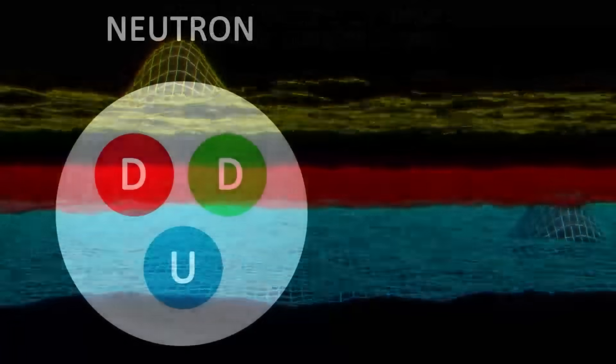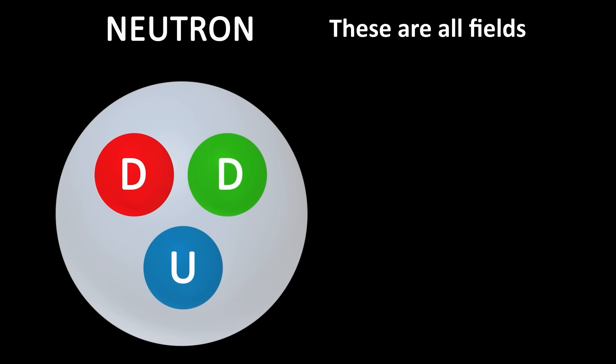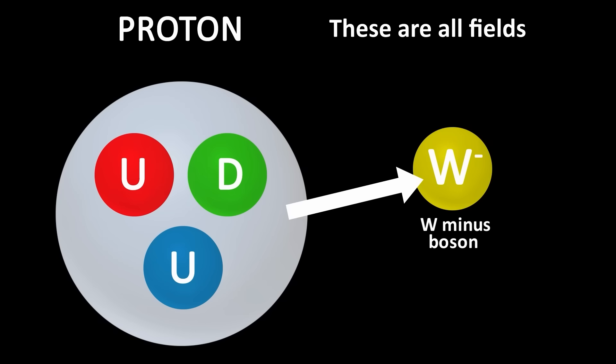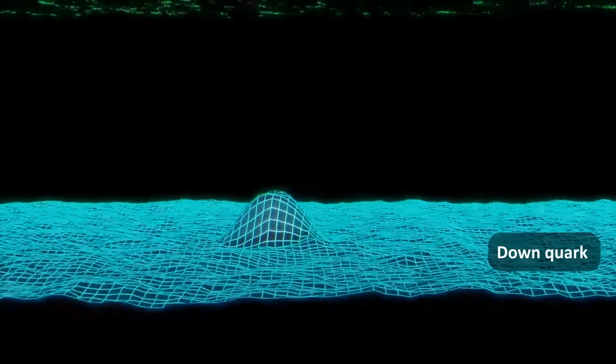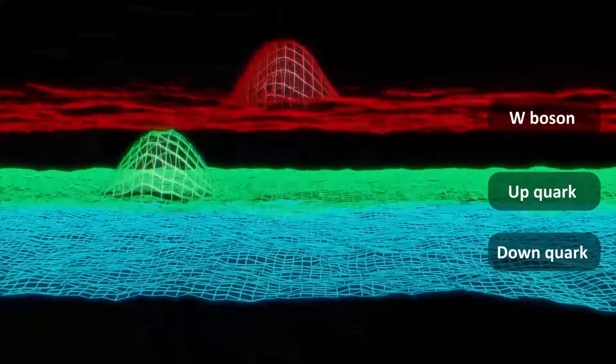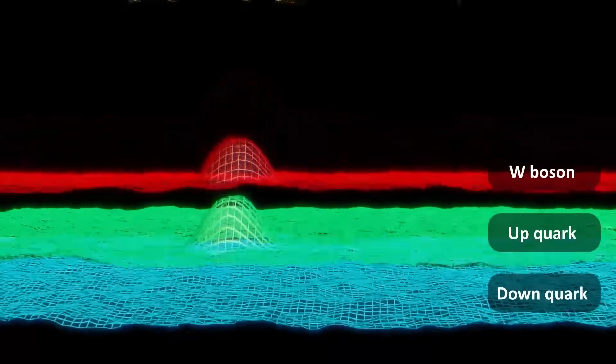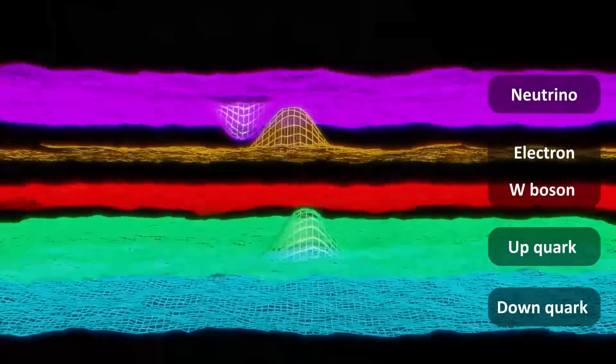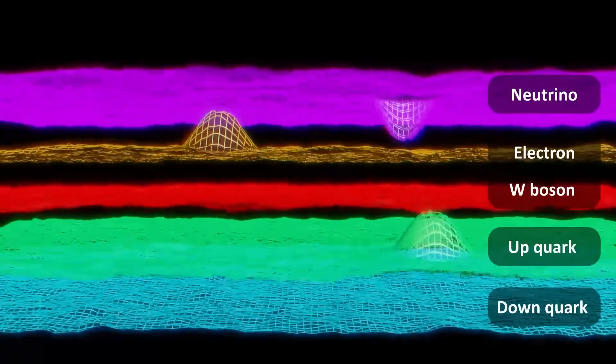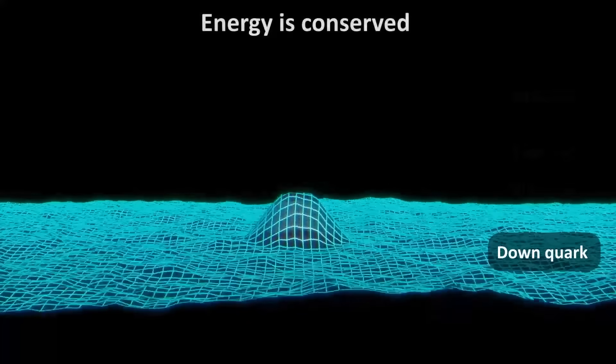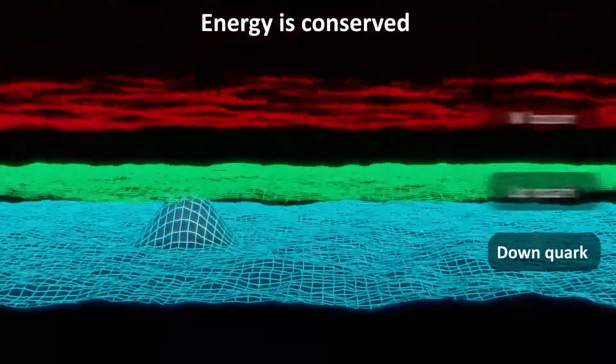So in our beta decay, for example, you start with the downquark field. This field transfers its energy to the upquark field, and the w boson field. The w boson field then transfers its energy almost immediately to the electron field, and the anti-neutrino field. So we started with one particle in the downquark field, and we ended up with three particles, simply by the fields exchanging energy. Note that although the number of particles changed, the total energy is always conserved. If you add up all the masses and kinetic energy at the beginning, they will add up to all the masses and kinetic energy at the end. In other words, the energy of the fields is the same before and after the energy exchange.